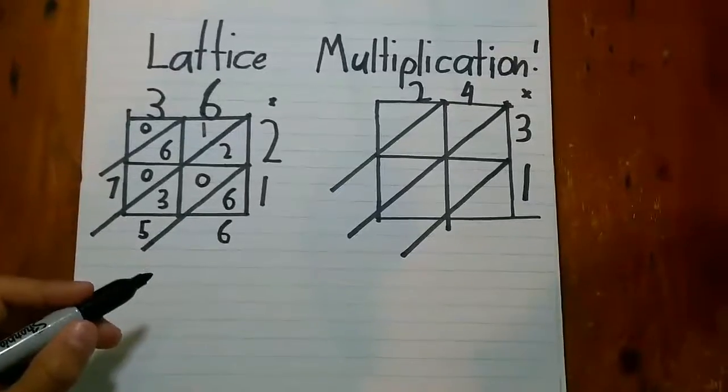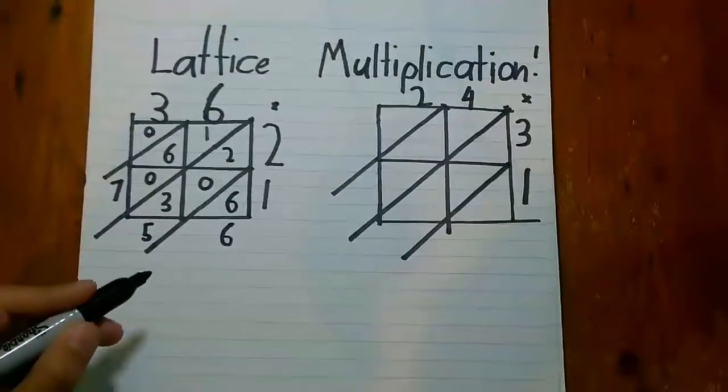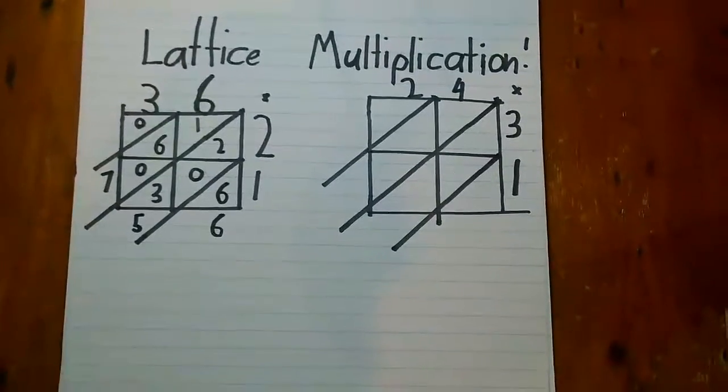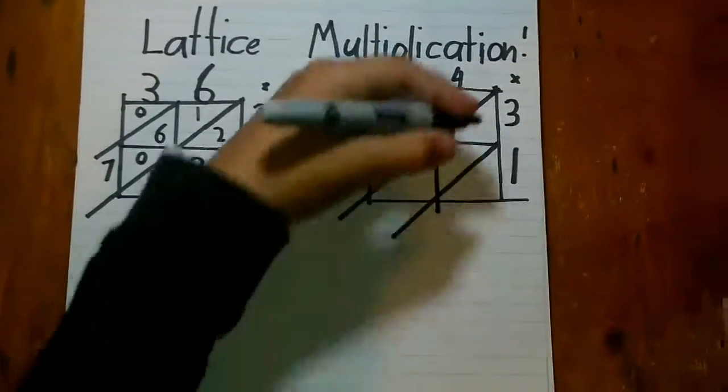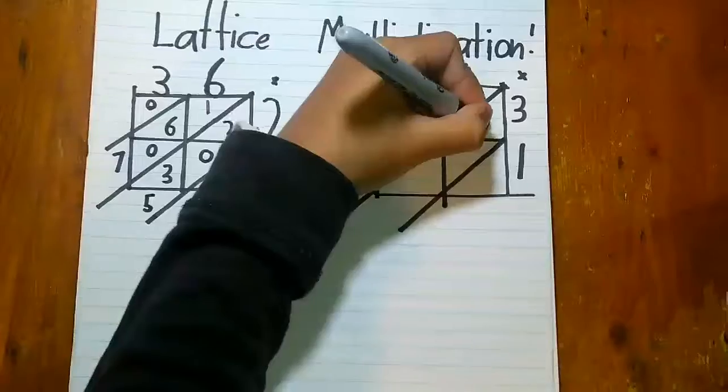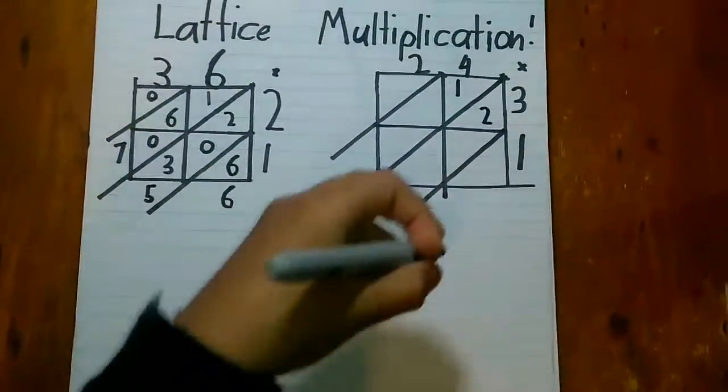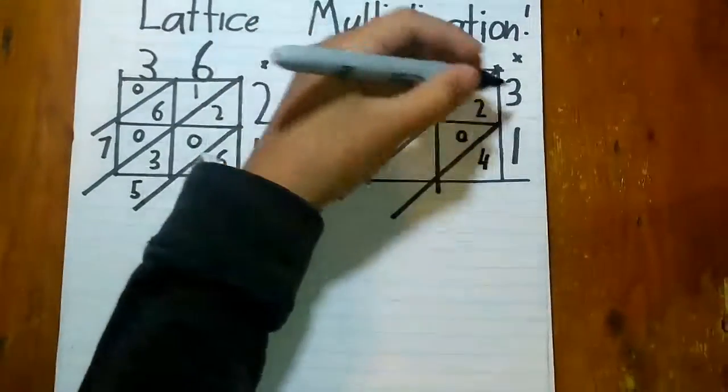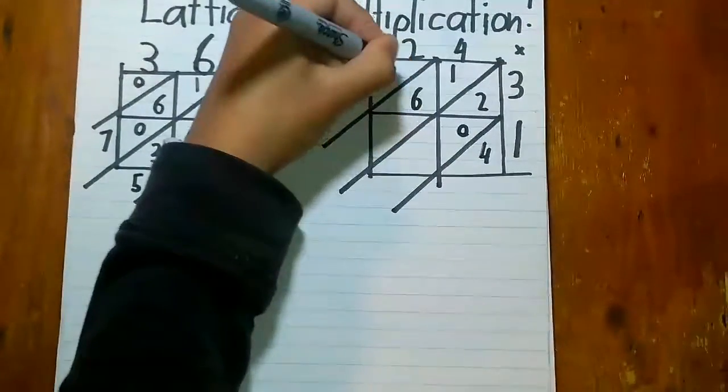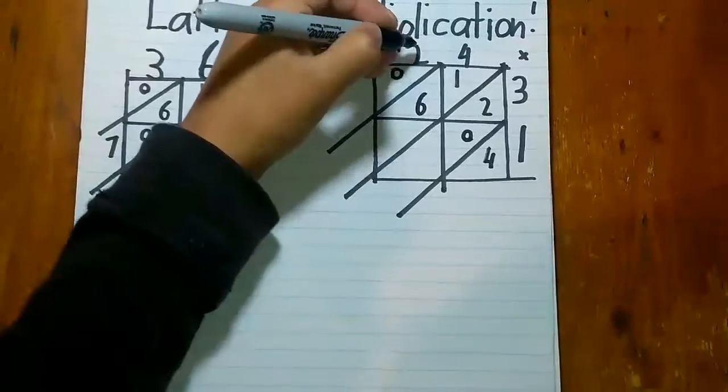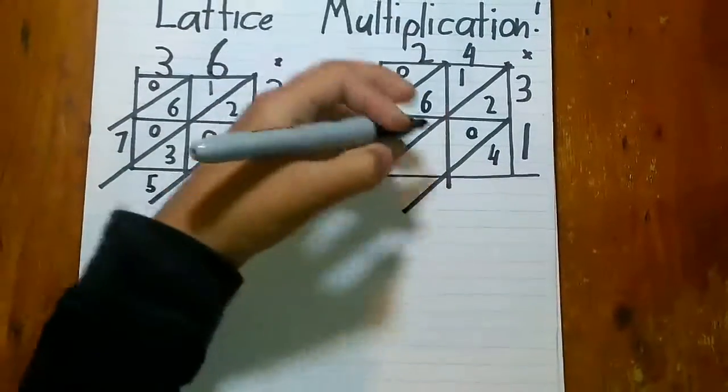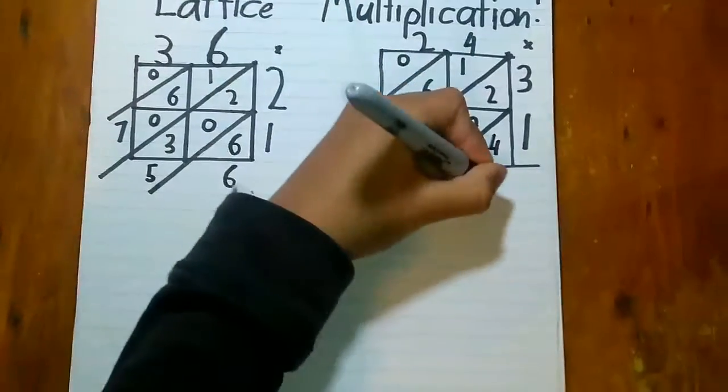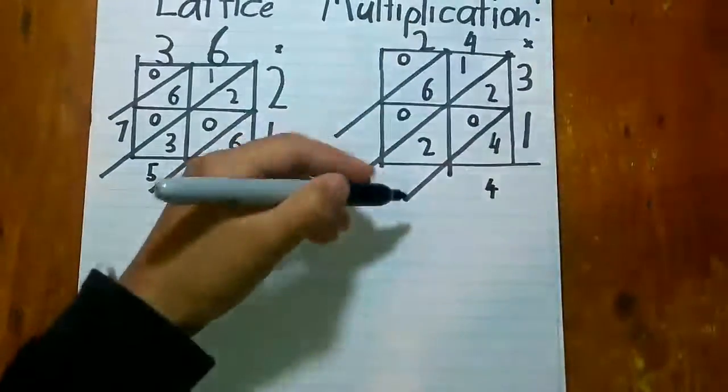So 24 times 31. 4 times 3 is 12, and 4 times 1 is 4, and 2 times 3 is 6. And last step, 2 times 1 is 2. So 4, and then 2 plus 2 is 4.